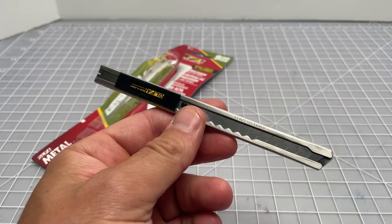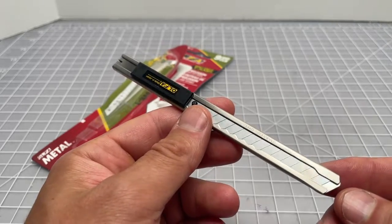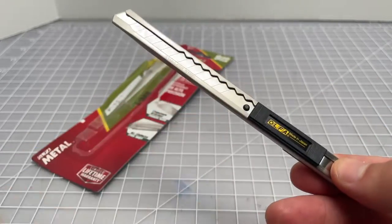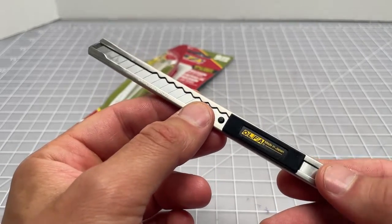This quick video is about the Olfa SVR1, the company's stainless steel utility knife. It's a very popular utility knife that sells for about eight or nine dollars. Very easy to find on Amazon, Home Depot, places like that.